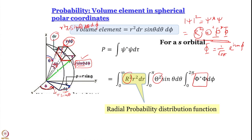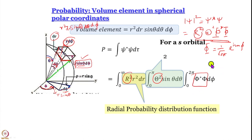The second term is Θ²·sinθ·dθ. For an s orbital, Θ can be taken as 1, so the integral from 0 to π of sinθ·dθ equals [–cosθ] from 0 to π = 1–(–1) = 2. Integrating the φ part from the normalization constant gives 2π. So we get 4π total. For an s orbital, the radial probability distribution function is 4π·R²·r²·dr. For others, we just work with R²·r²·dr.